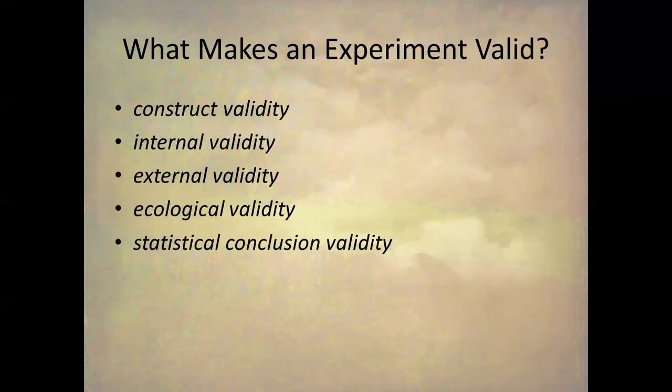I'm not going to introduce very much new material, but I'm going to be bringing together all the material on validity from McBride. So, what makes an experiment valid? These things: construct, internal, external, ecological, and statistical conclusion validity.